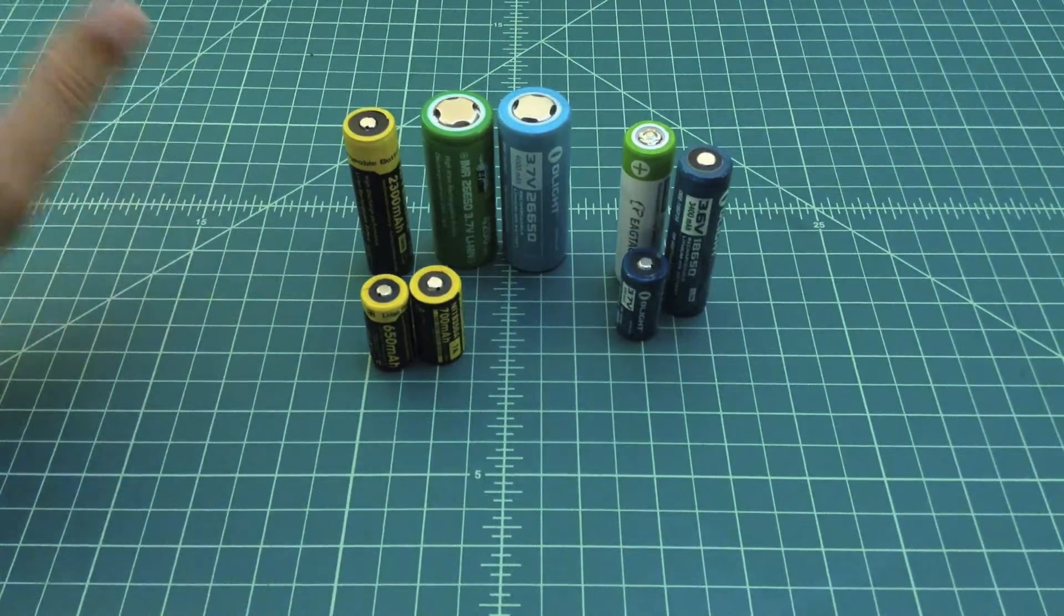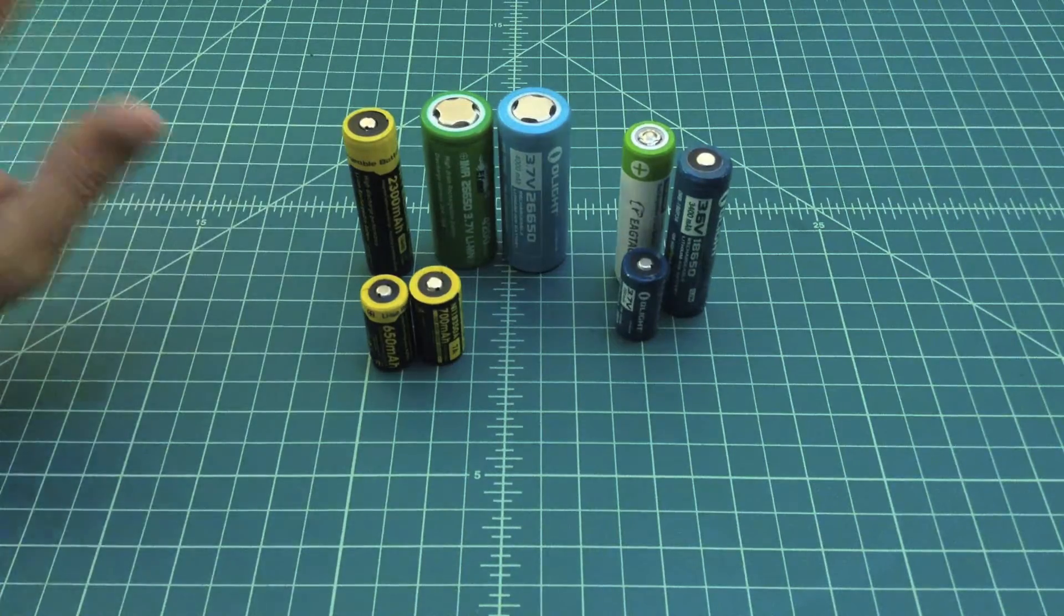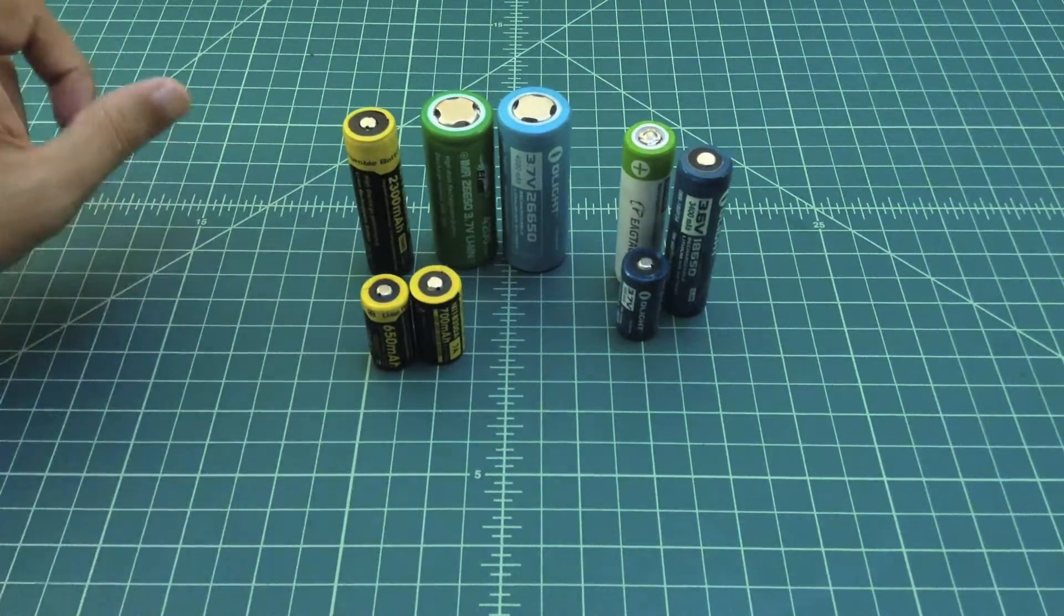When you pour water out of a bucket versus pouring it out of a bottle, it goes faster when you pour it out of the bucket. The same thing holds true for a battery that has a higher amperage rate.